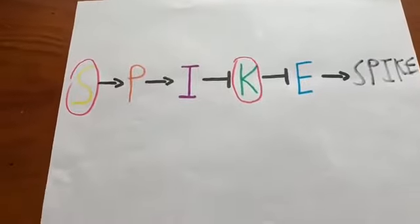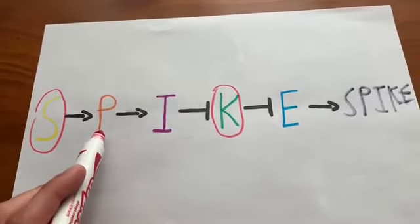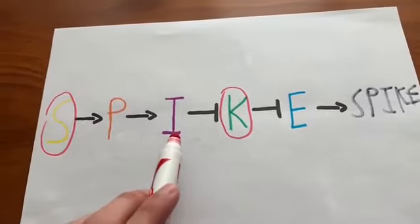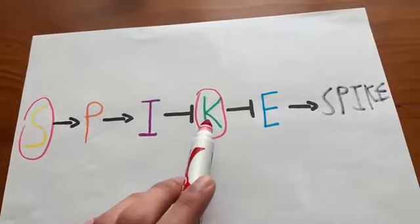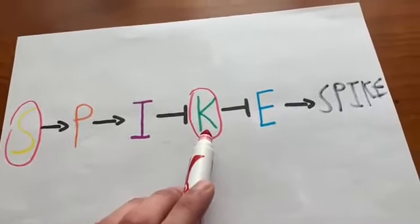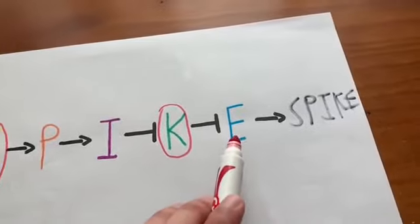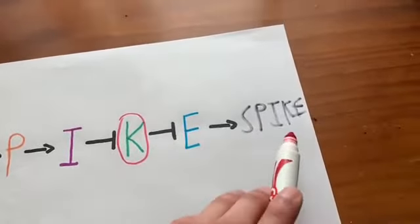Now what if S and K are mutated. S cannot activate P, so P cannot activate I, so I cannot block K, but since K is mutated also, K cannot block E. So here, E forms spikes.